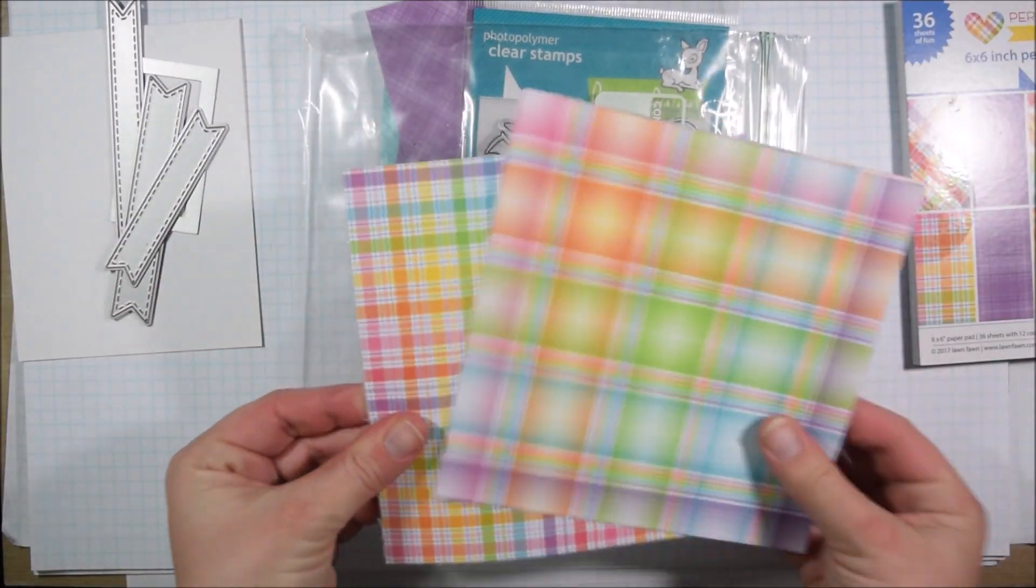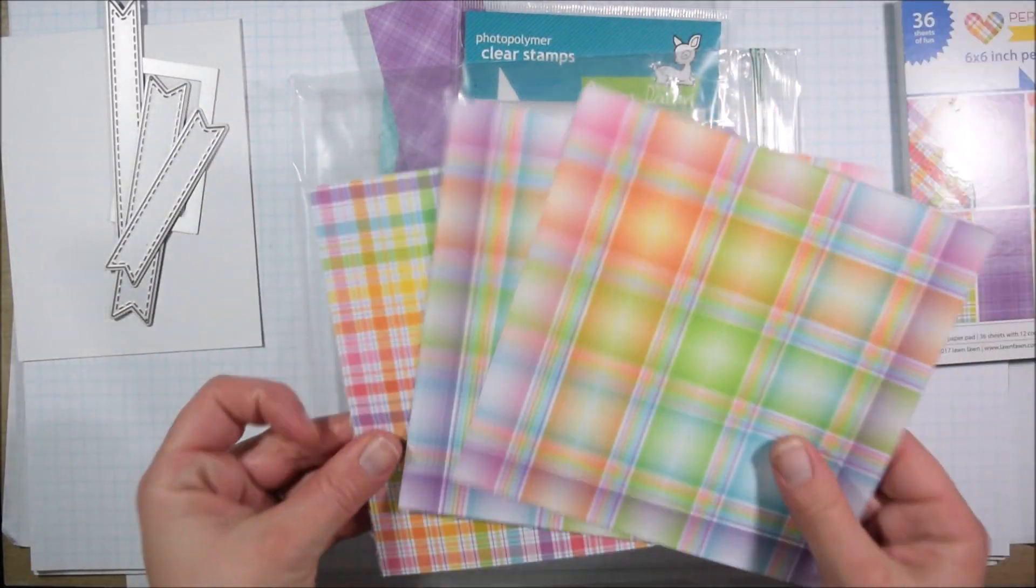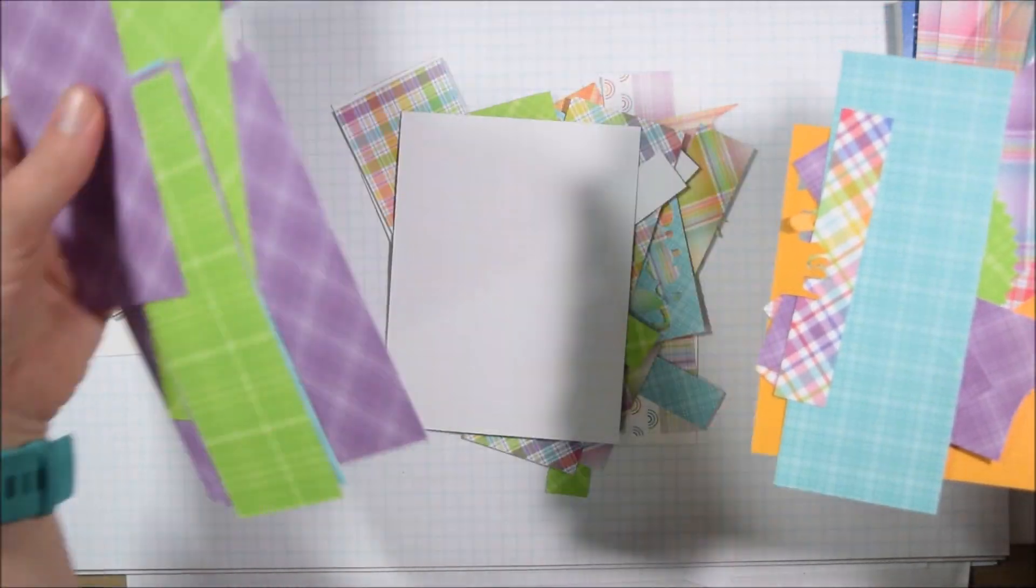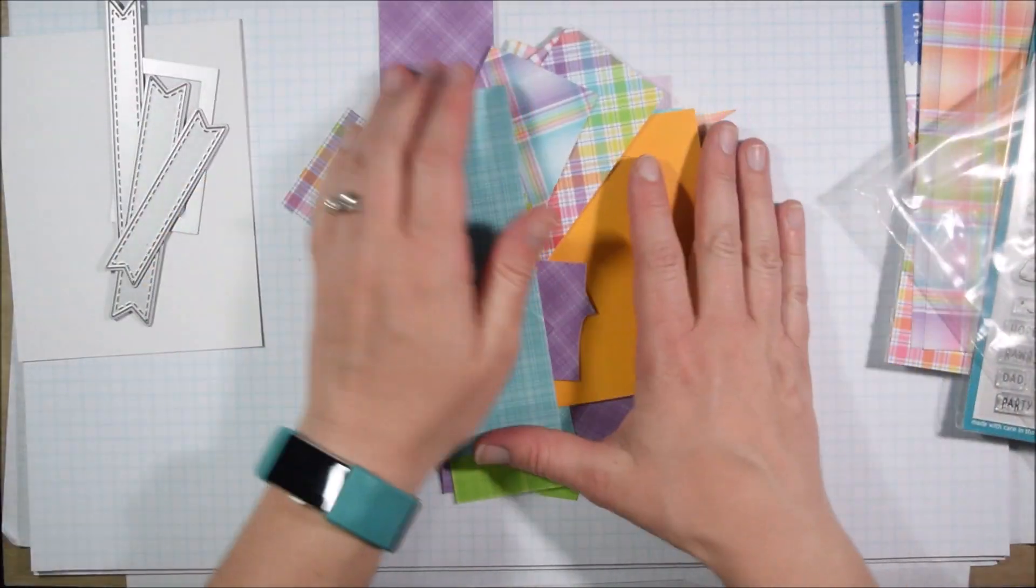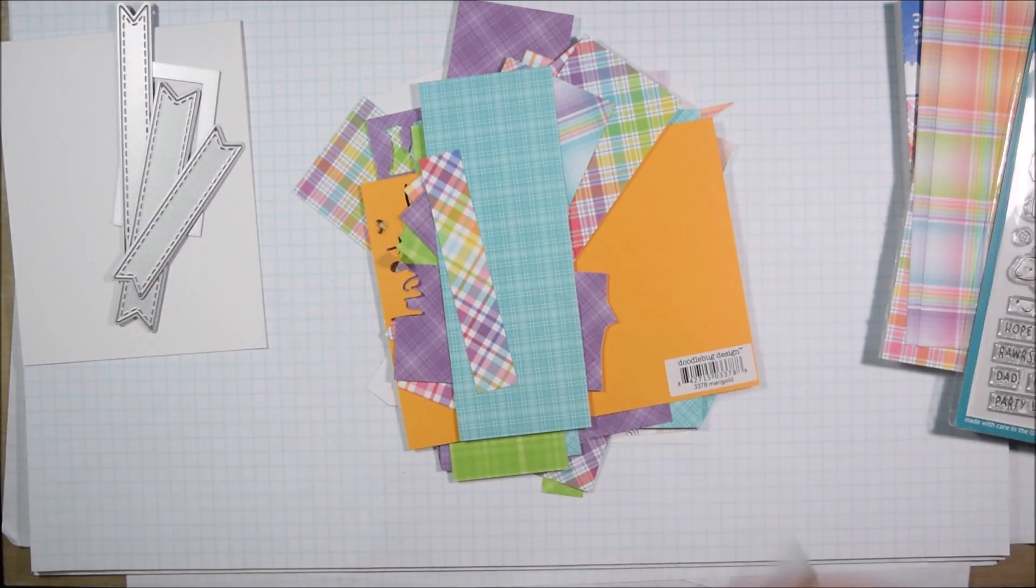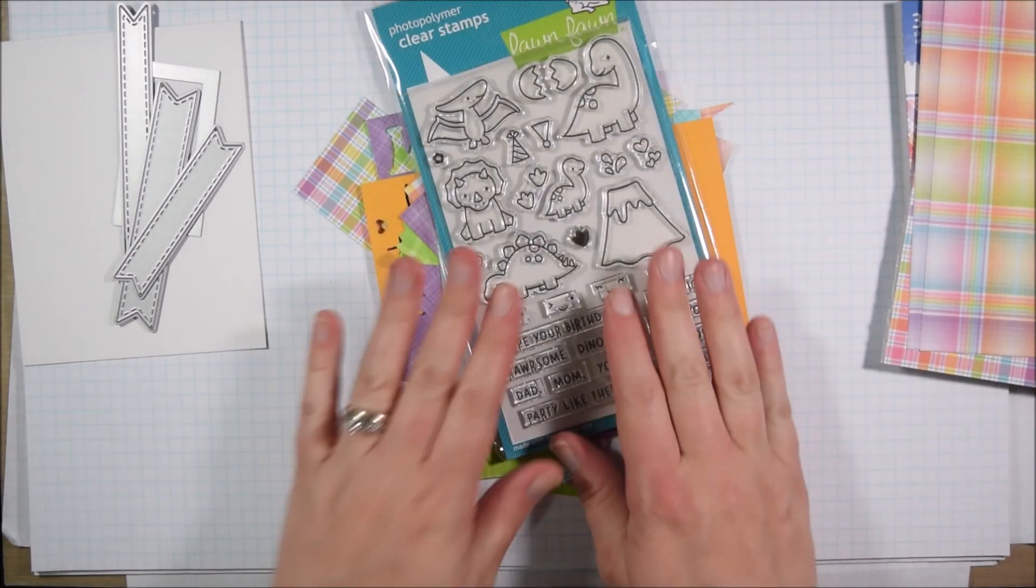But then I also still have a full paper pad somehow. I guess I really like this one and bought two. So I want to just focus on the scrap pile. I took all those whole sheets and I put them off to the side. I'm not going to touch them, I'm going to try to use up the scraps.